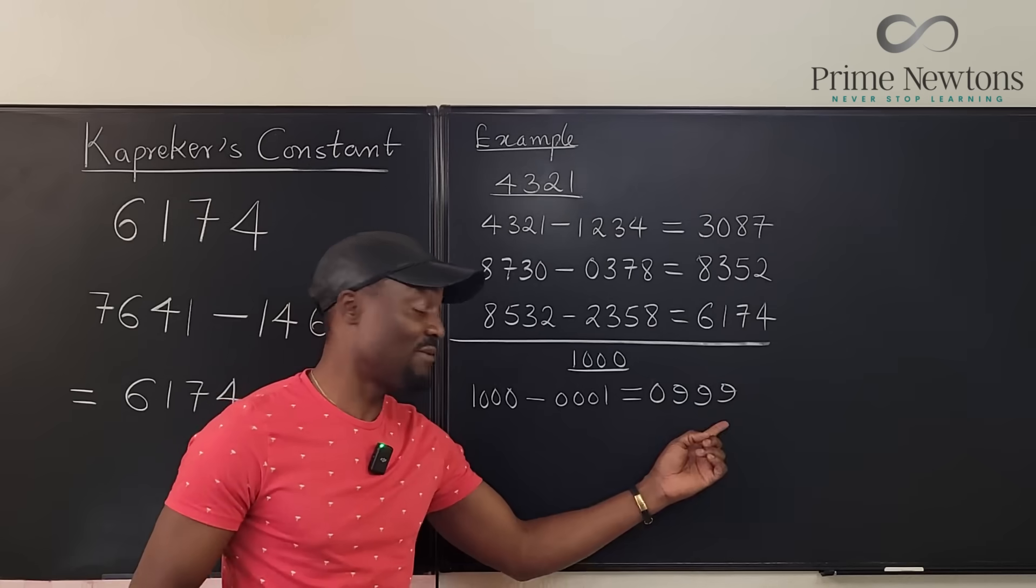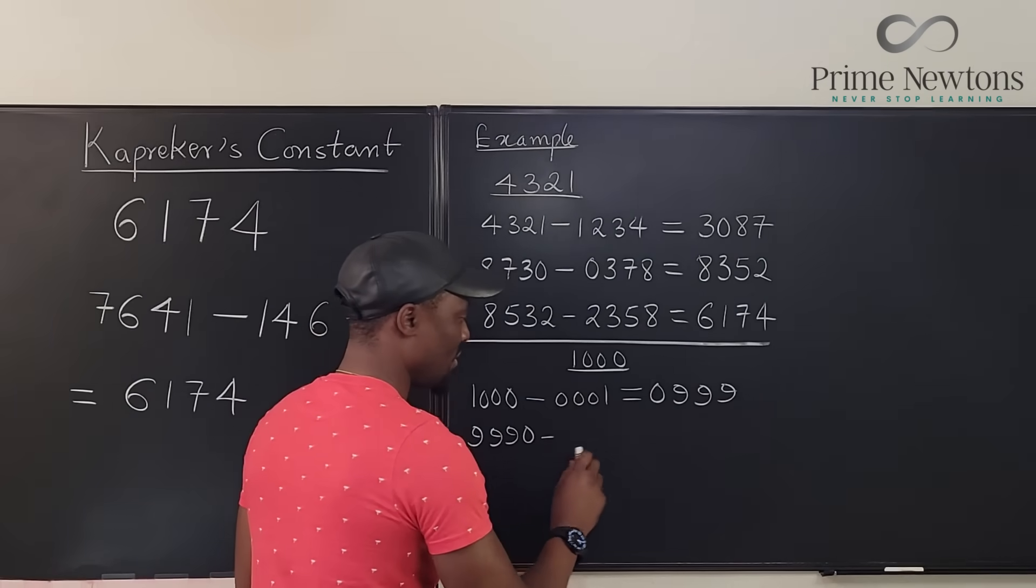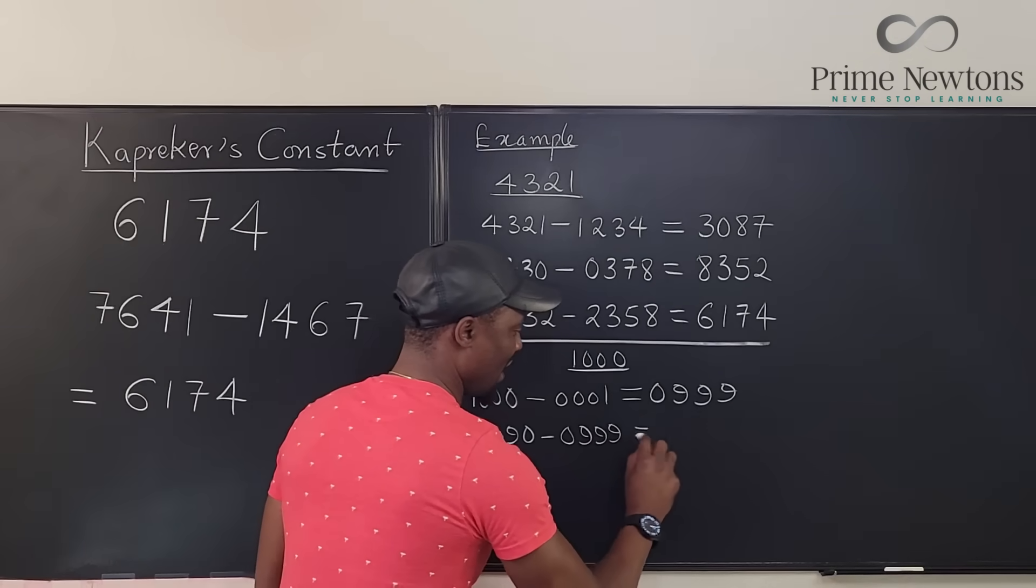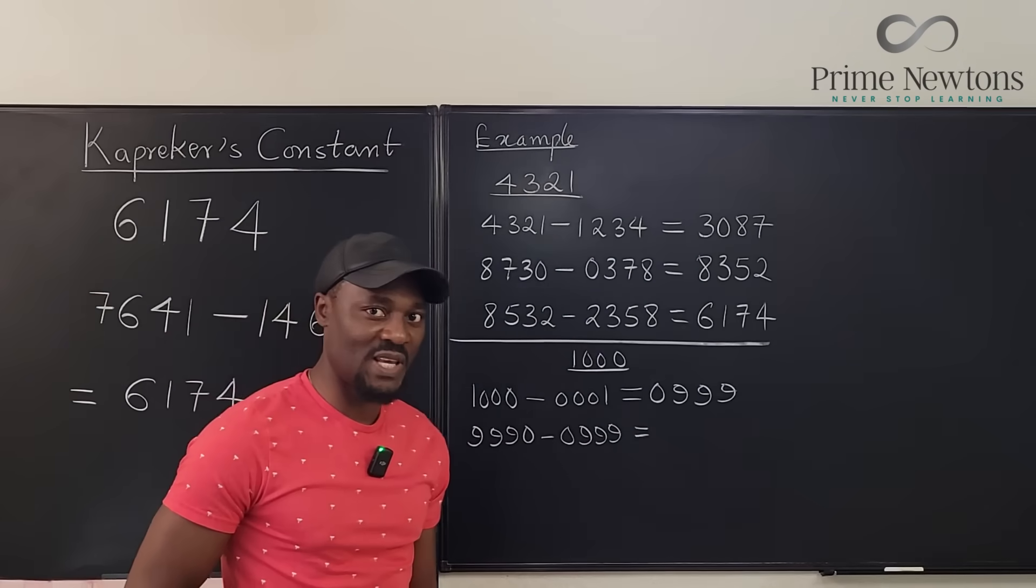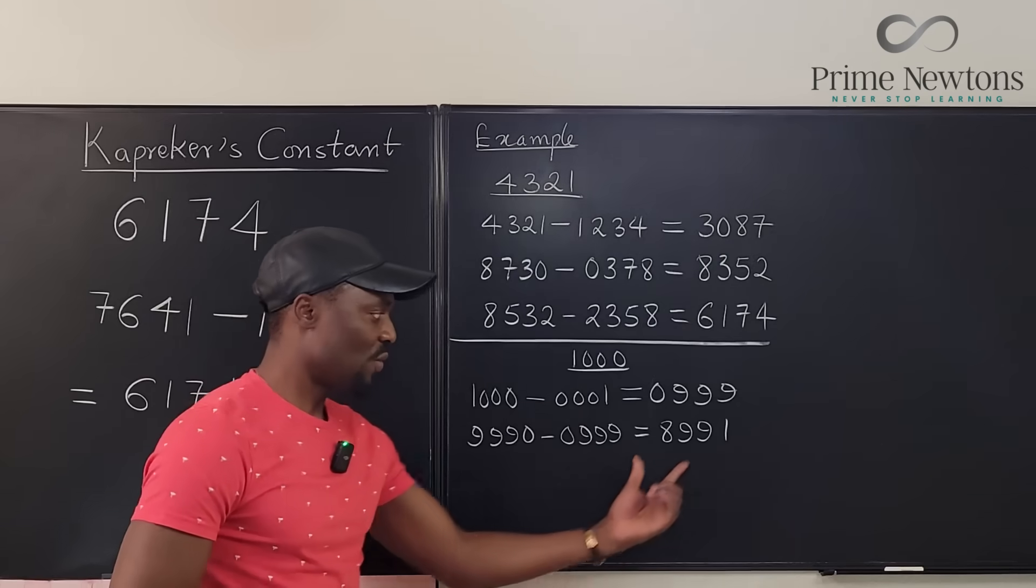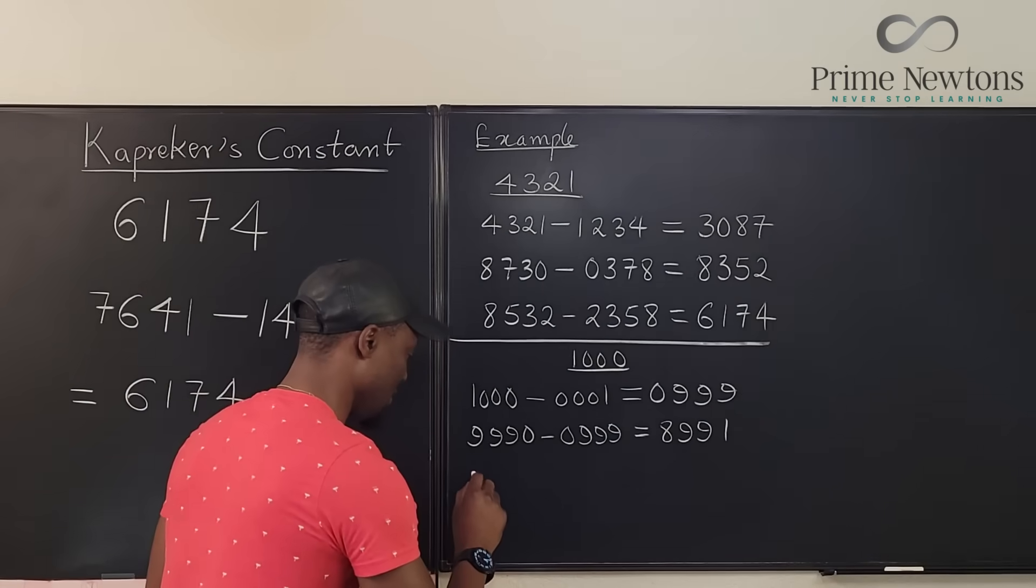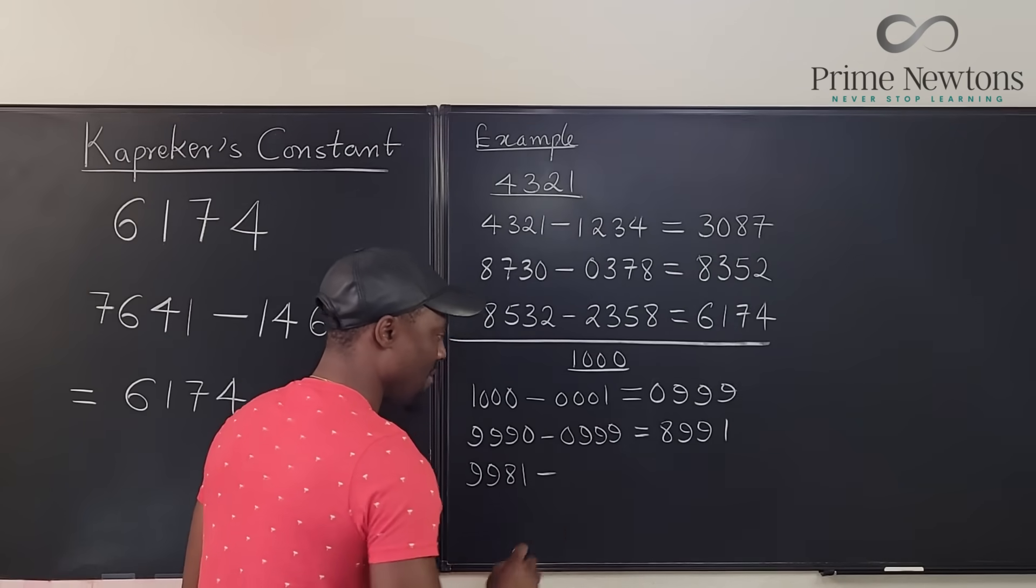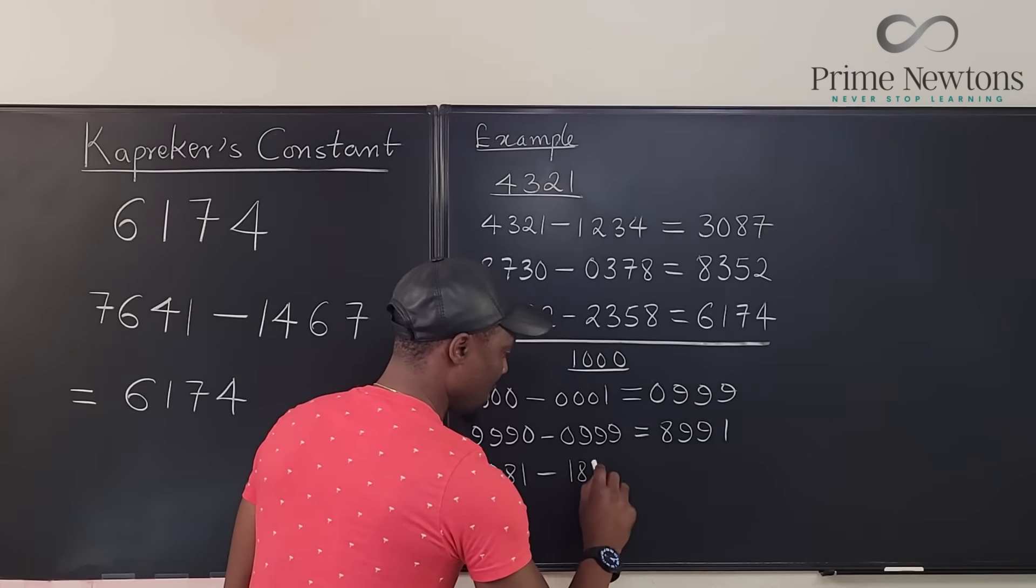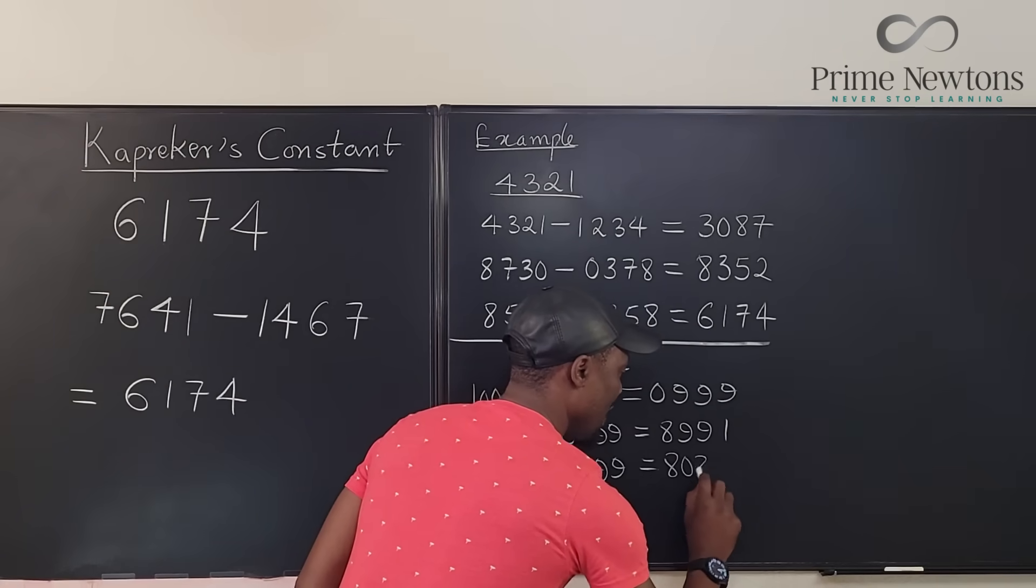0,999. So these are my 0,999. What's the biggest number I can get from this? It's going to be 9,990 minus the smallest number would be 0,999. If we do this subtraction, what do we get? We're going to get 8,991. We rearrange this again. It's going to be 9,981. That's the biggest number. 9,981 minus this is going to be 1,899. If we do this subtraction again, 8,082.